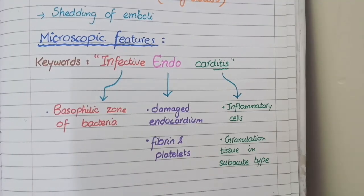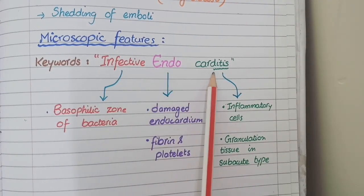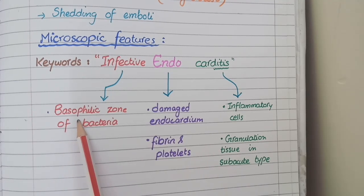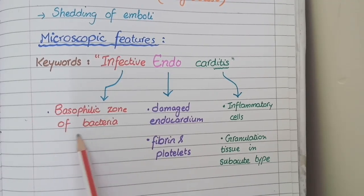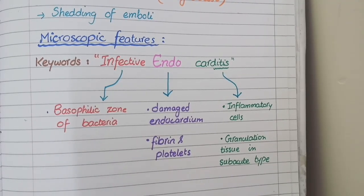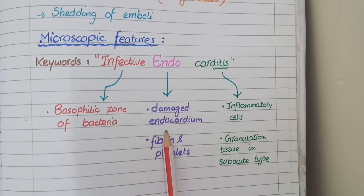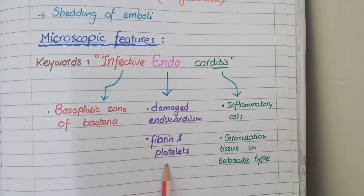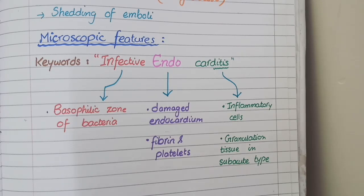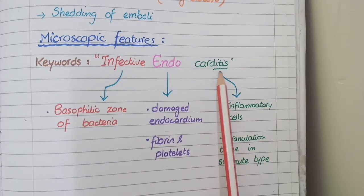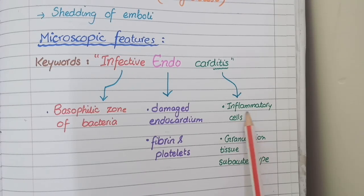For microscopic features, the keywords to remember are infective, endo, and carditis. Infective means bacteria, but as you are unable to visualize bacteria on H&E staining, in place of bacteria you just see a basophilic homogeneous zone. The second keyword is endo, representing damaged endocardium on which platelets and fibrin are deposited. The third keyword is carditis, and as -itis stands for inflammation, you see inflammatory cells.